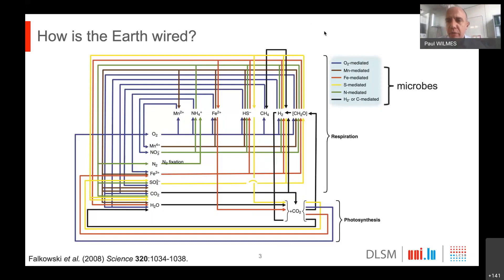Microbes are inherently important — not just for different biochemical transformations, but as I will highlight in the following slides, they are also integral to our own health and well-being. What is emerging more and more is that not just in the context of global change where we are messing with different biogeochemical cycles, but we have also affected our microbiota in and on ourselves, mostly through changes in lifestyle.